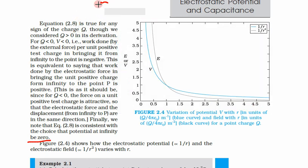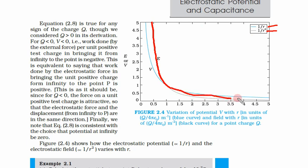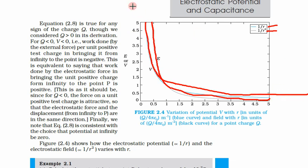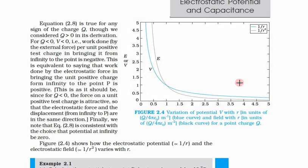Electric field decays fast because it has a 1 over r squared dependence, while potential has a 1 over r dependence. At a distance of about 5 units, the electric field is almost zero, but potential is still not zero and will reach zero at much higher distances. This graph generally comes in your exam, so please make this graph in your copies.